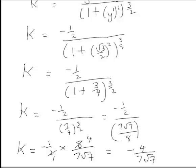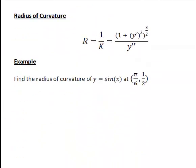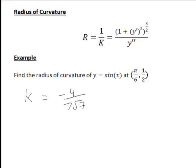We can also work out the radius of curvature, which is equal to 1 divided by the curvature — basically the reciprocal of the curvature formula we saw before.